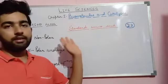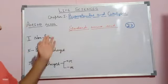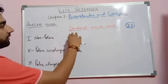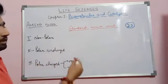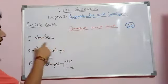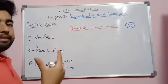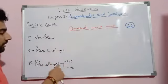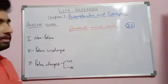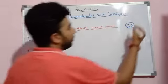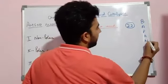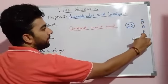Let us discuss the standard amino acids. We have described them into three different classes: the first is non-polar amino acids, the second is polar uncharged amino acids, and the third is polar charged amino acids, which includes both positive and negative amino acids. I have already told you the learning scheme: BAPAN — Basic, Acidic, Polar, Aromatic, and Non-polar.